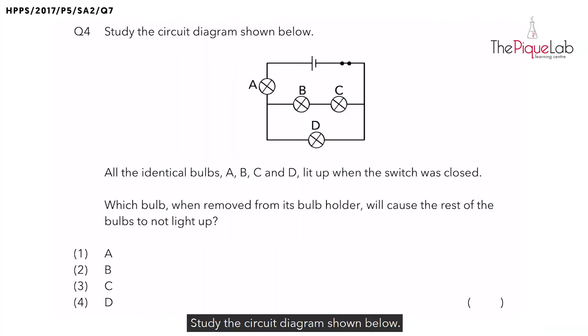Let's get started. Study the circuit diagram shown below. All the identical bulbs A, B, C and D lit up when the switch was closed. This means that all bulbs are in working condition.